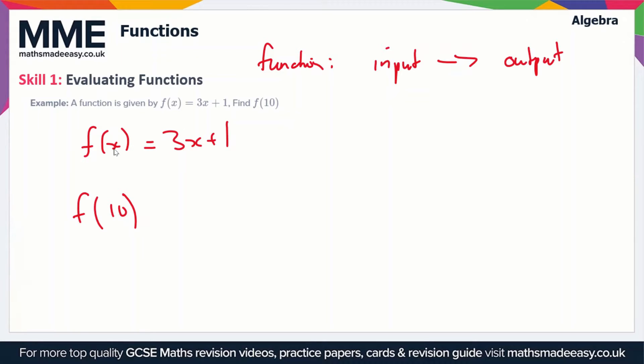So the function treats values of x, multiplies them by 3 and adds 1 to them. So if we're using f of 10, what this means is we just put 10 in place of x. So we get 3 times 10 then we add 1, so this is going to be 31.